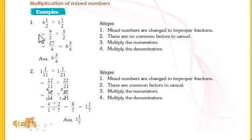Multiplication of mixed numbers. So here we have the example: 4 whole 1 divided by 2 into 1 whole 1 divided by 2. We'll see how we can multiply this. To solve this we have some steps. We have to follow some steps, let's see what are the steps.